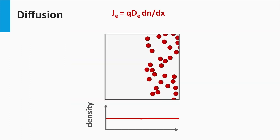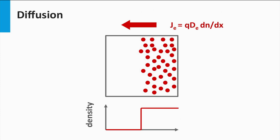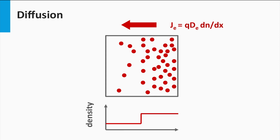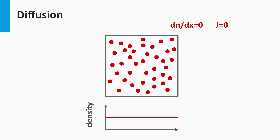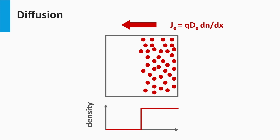Now we consider a non-uniform particle distribution. At the right, the particle density is higher than at the left — a density gradient is present going from right to left. If these particles all move randomly, the flux of particles toward the lower-density region on the left will be higher, and the flux toward the higher-density region on the right will be smaller. There will be a net movement of particles until the density is uniformly distributed, at which point no gradient exists and there is no net movement due to diffusion.